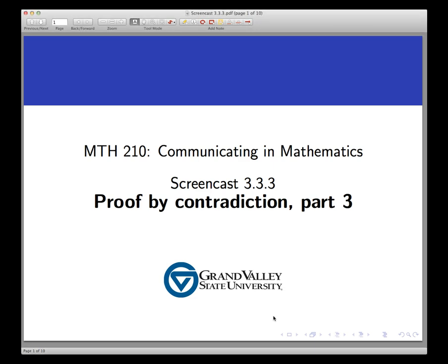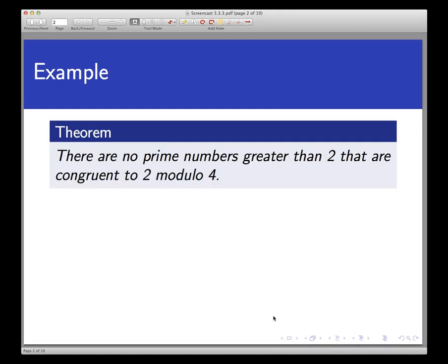The theorem we're going to prove now says that there are no prime numbers greater than 2 that are congruent to 2 mod 4. Or if you wanted to say that differently, if p is a prime number and greater than 2, then p is not congruent to 2 mod 4.